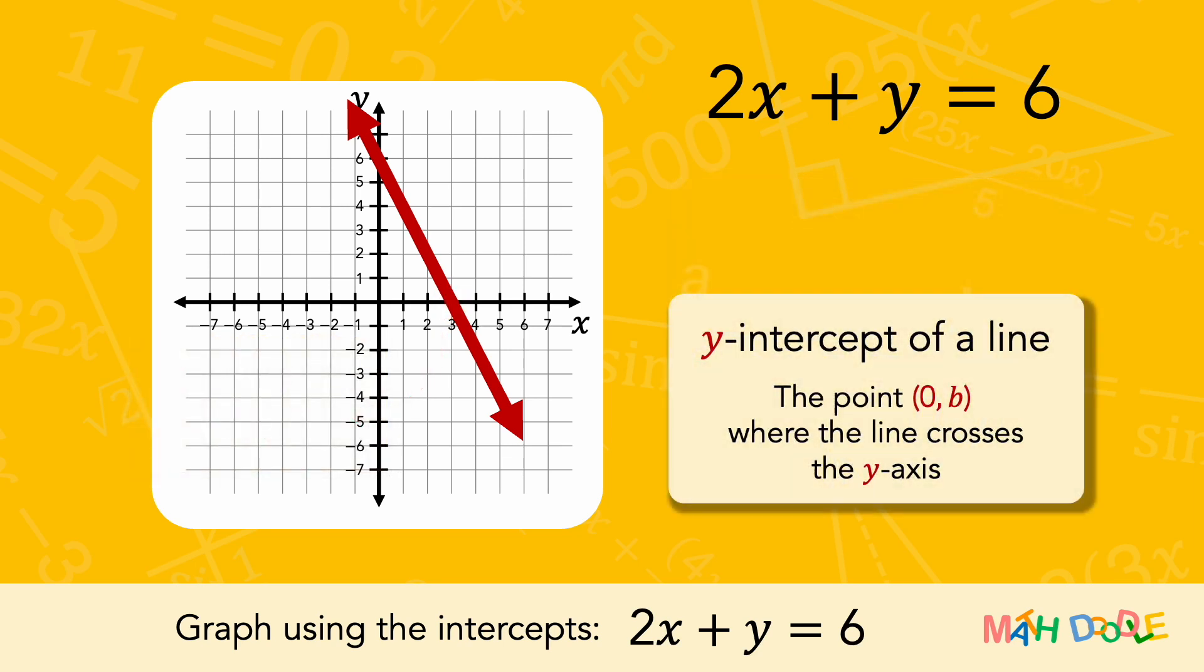On the other hand, the y-intercept of a line is the point where the line crosses the y-axis, and it has an x-coordinate of 0.